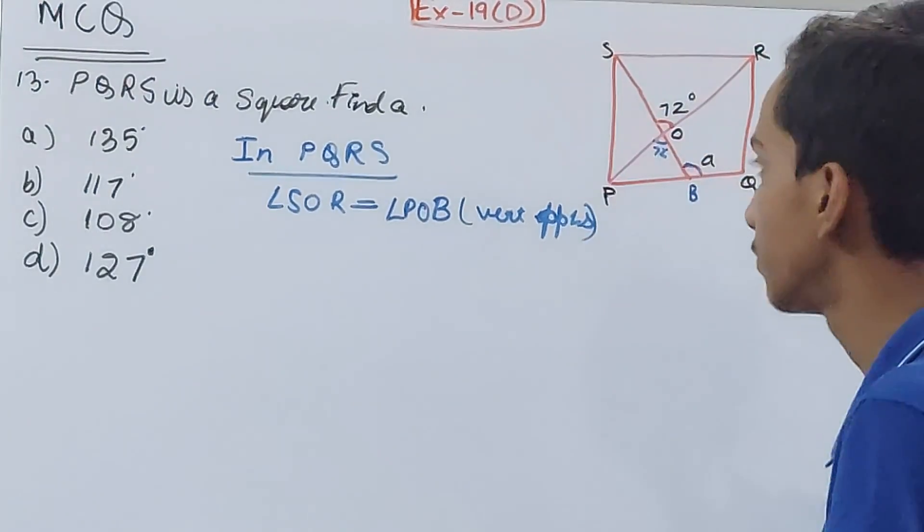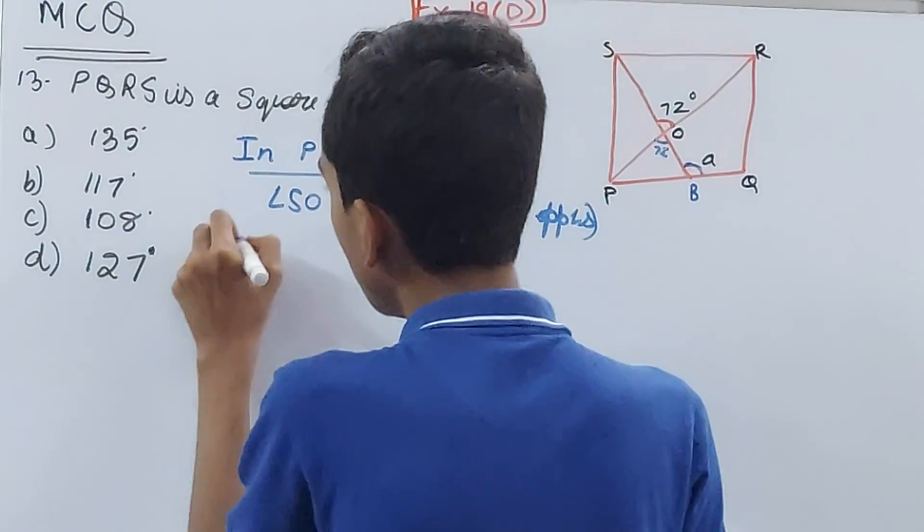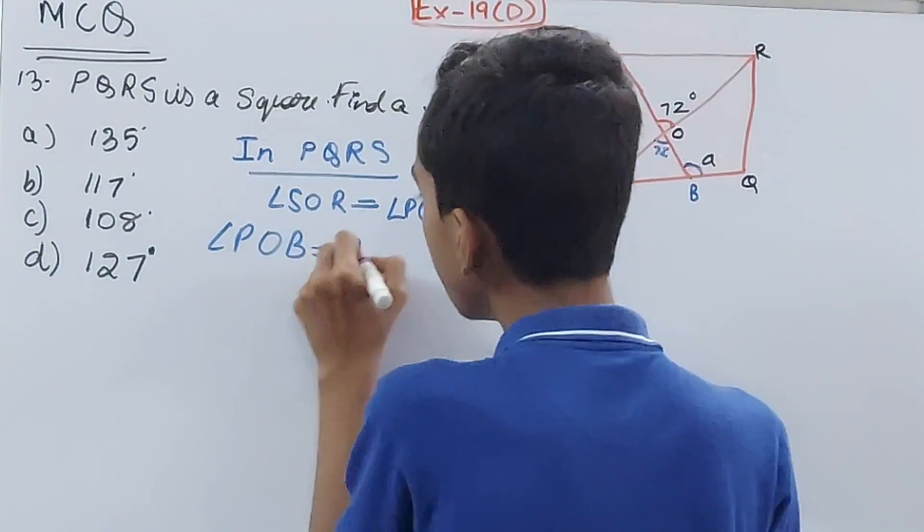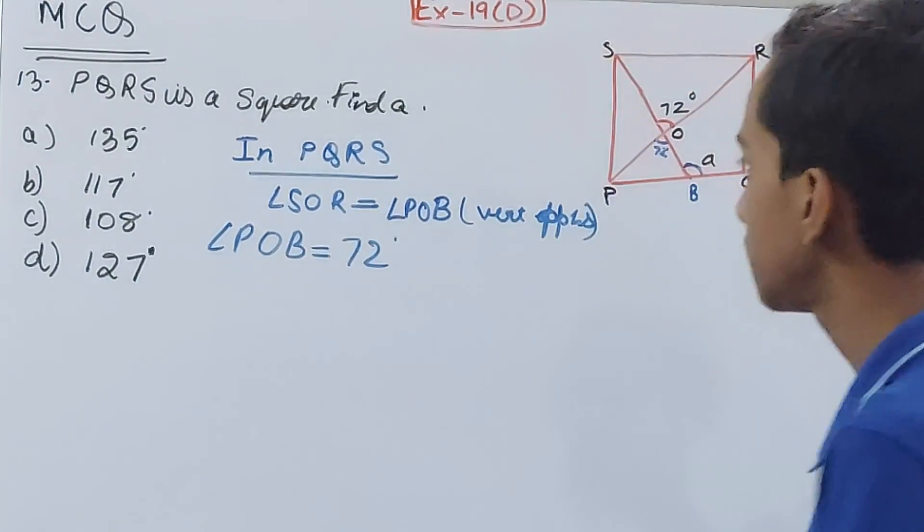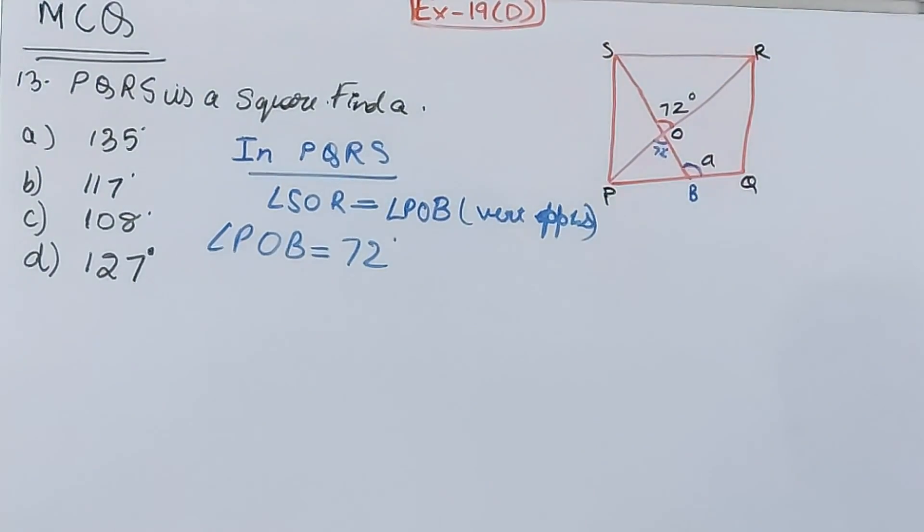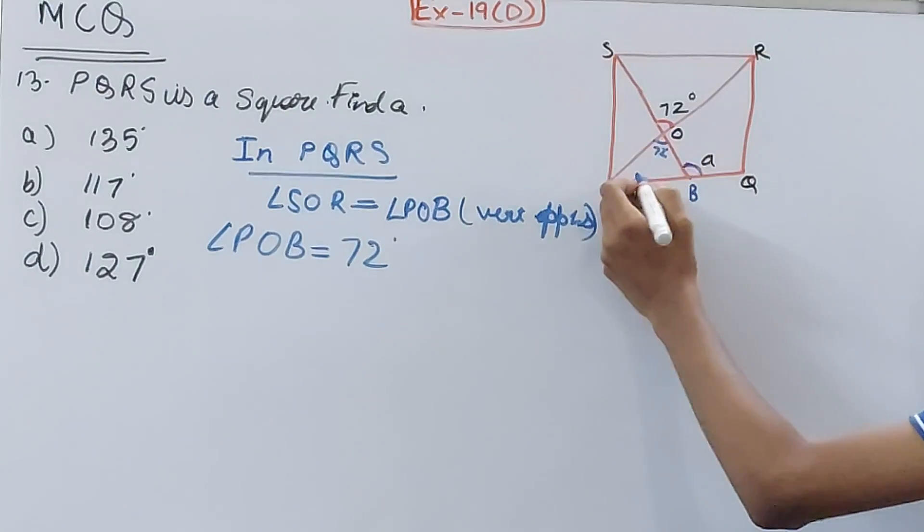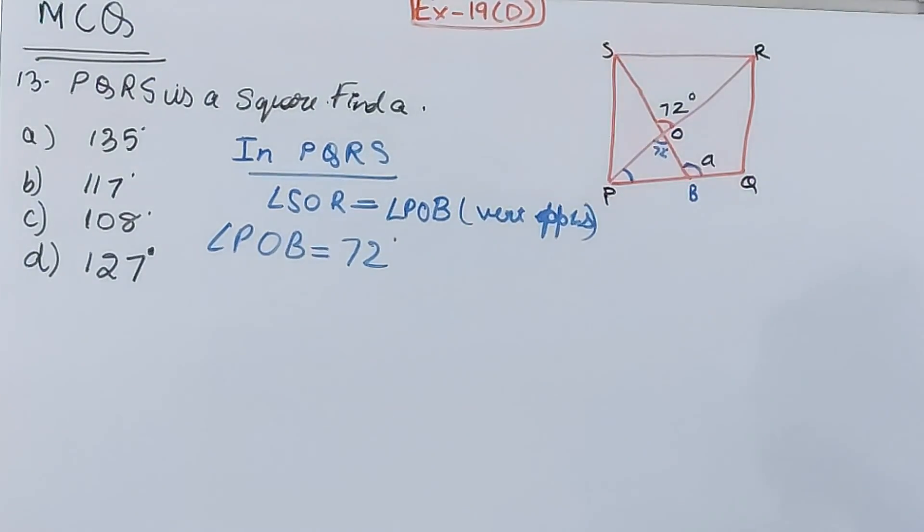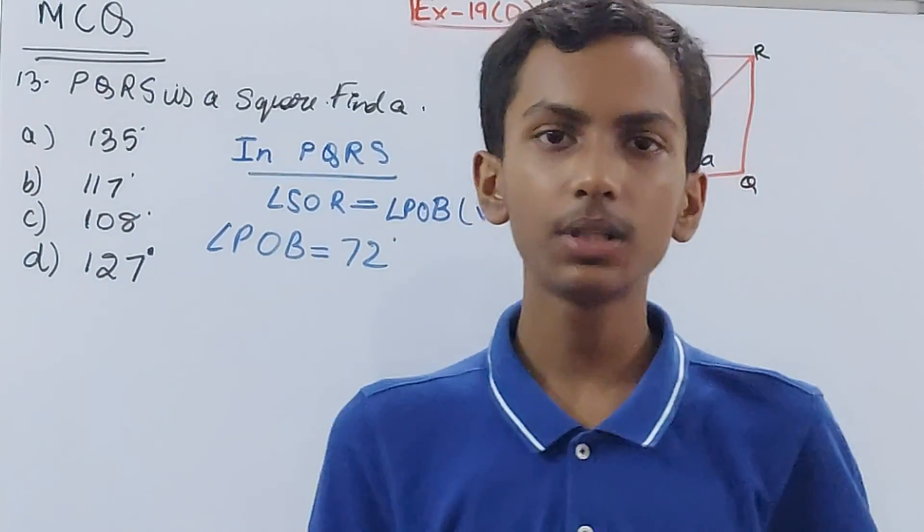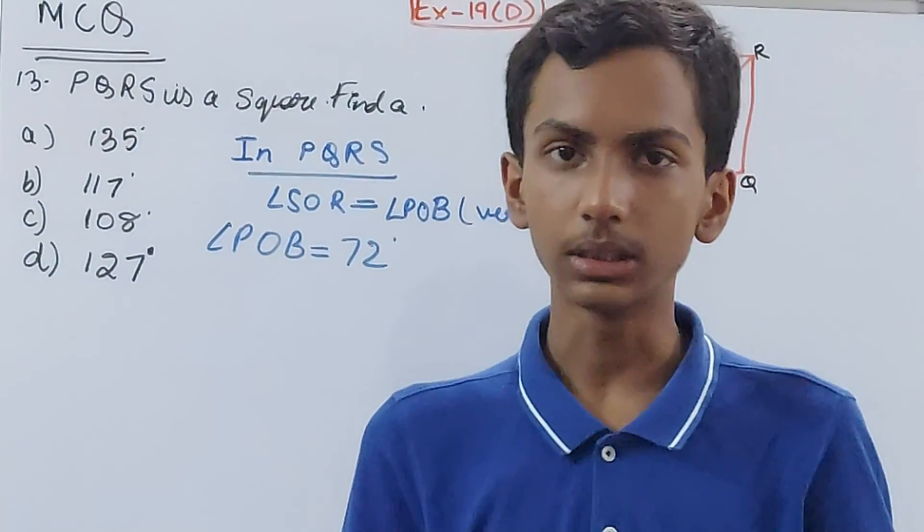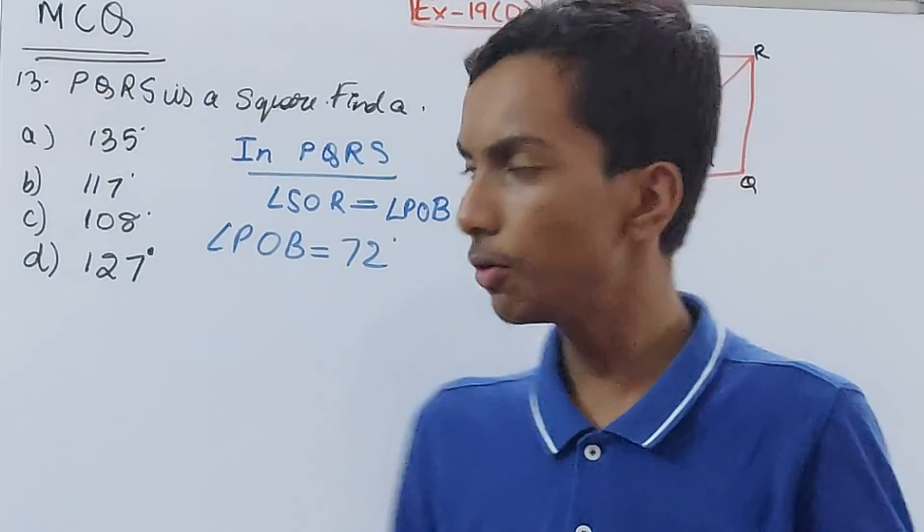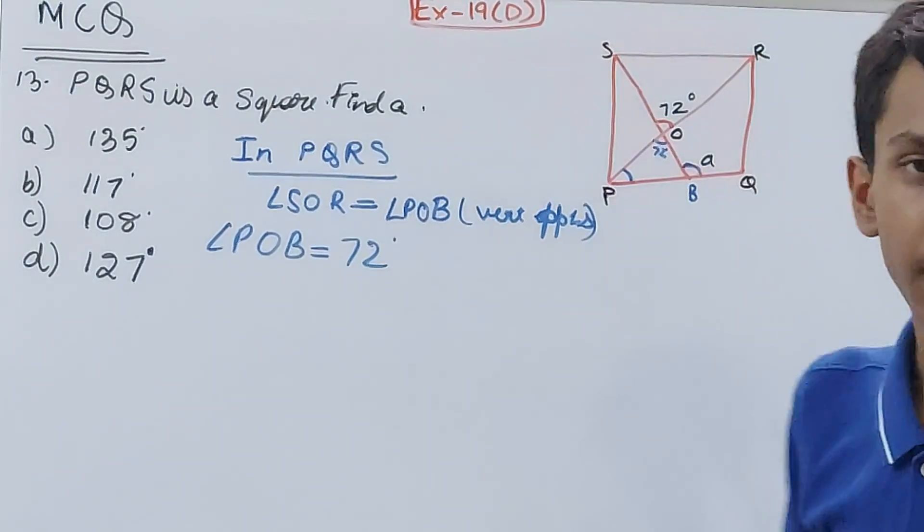Yes, this is 72, so this one will be 72 degrees as well. So angle POB is equal to 72 degrees. Now look, if you find out this angle, can we use exterior angle property of triangle and add both the angles to obtain the exterior angle? What is the exterior angle over here? Angle a.